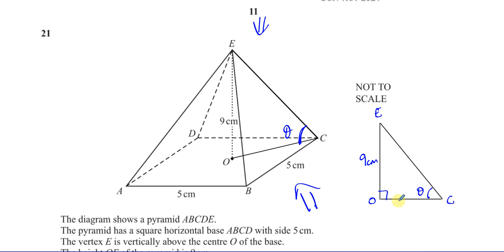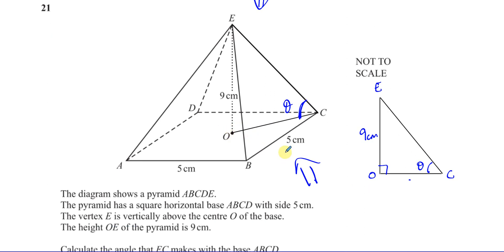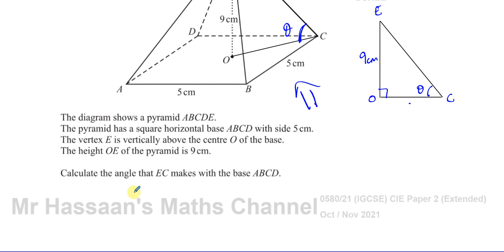Now, if I find the length OC, which is from there to there, I can find this angle because I can use tangent. I have two sides, a right angle triangle. I can use tangent. I can find the angle when I want. So finding OC is the key to our problem here.